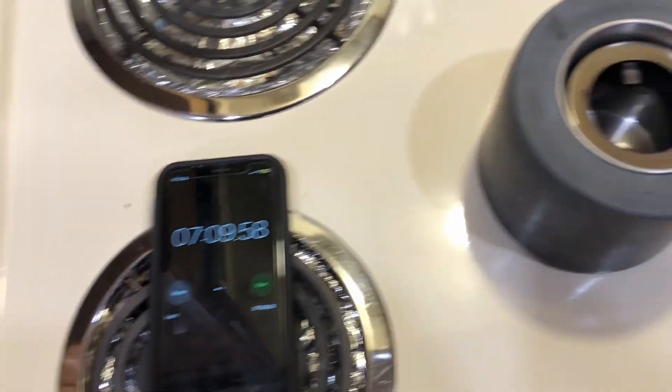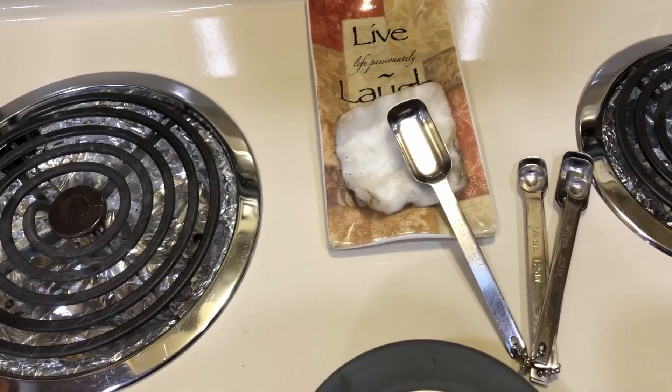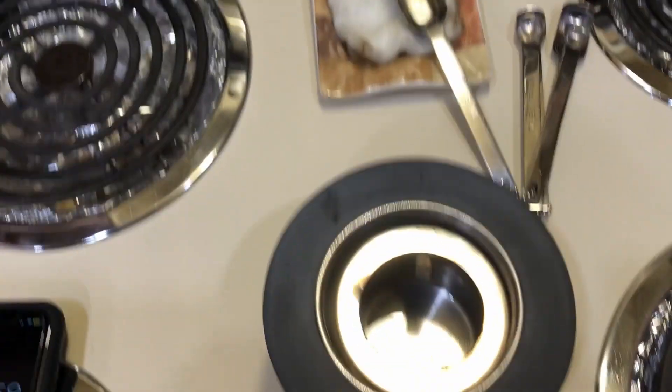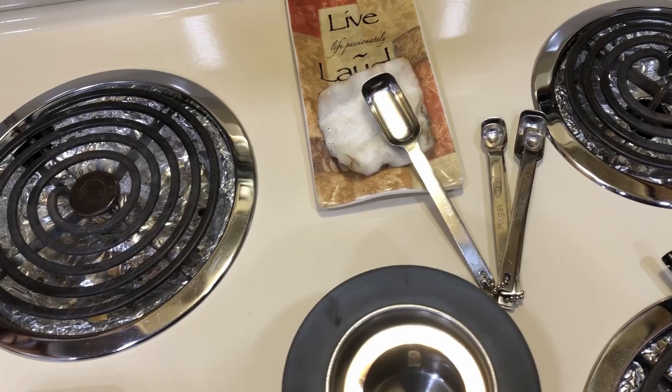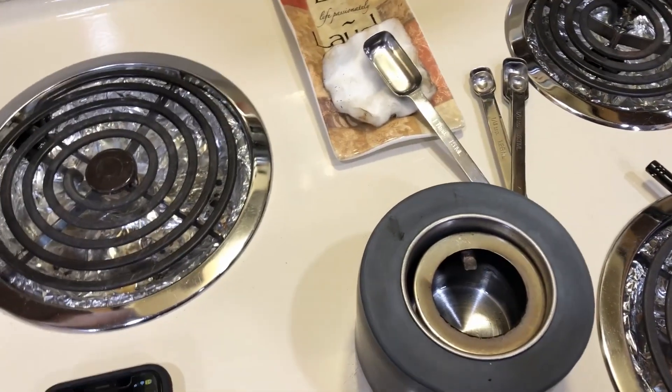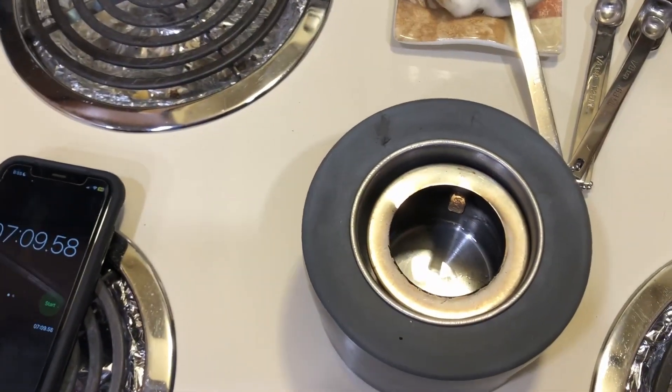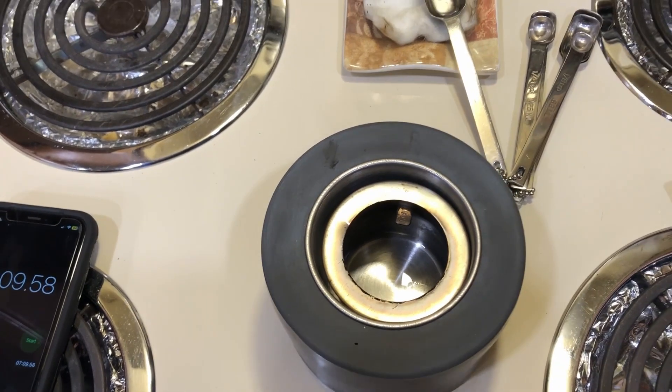So again, we're looking at 6.55, seven minutes it ran without the ceramic wool. So I'm going to let this cool down for a minute now. I will put the ceramic wool in it, put one tablespoon of alcohol in it. It'll be the same stuff, the 70%. And then we'll do this test again to see how long it lasts with the ceramic wool.